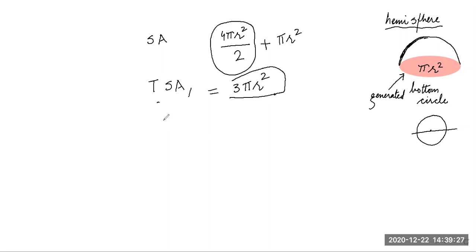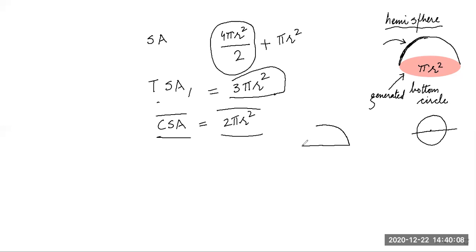The curved surface area of a hemisphere is 2πr² — that is only the curved part. The bottom circular area is a flat, plane surface. For example, if there is a hemispherical dome attached to a cylinder and you need to paint only the dome, you use the curved surface area: 2πr², not including the bottom circle πr².